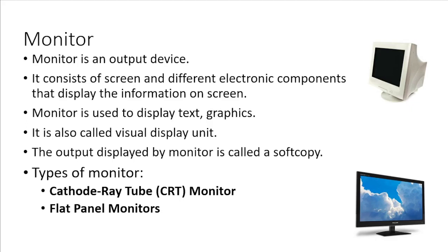First of all we will discuss about the monitor. Monitor is the most commonly used output device. It consists of a screen and different electronic components that display the information on the screen. Monitors are used to display text, graphics, and video in different colors. It is also called a visual display unit, and the output displayed on a monitor is called soft copy.